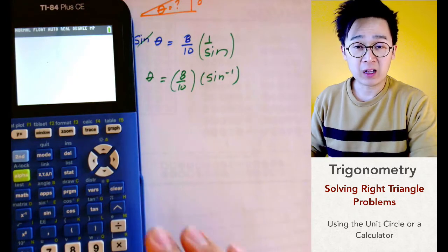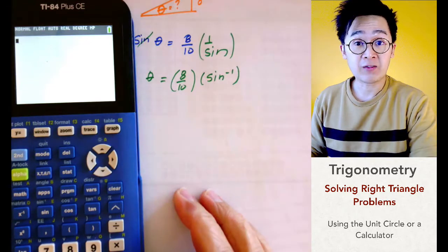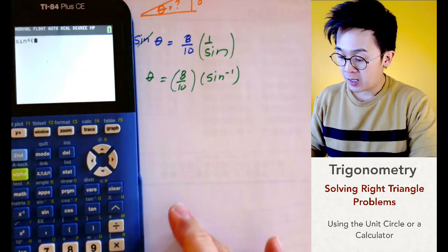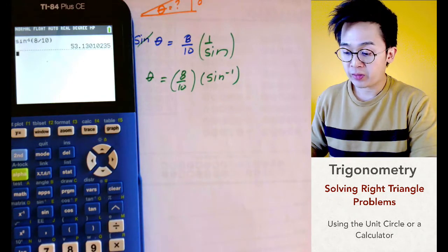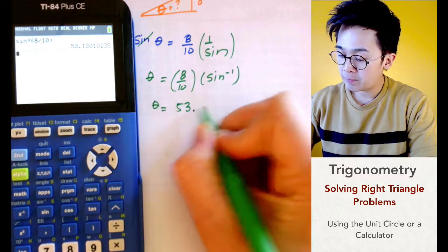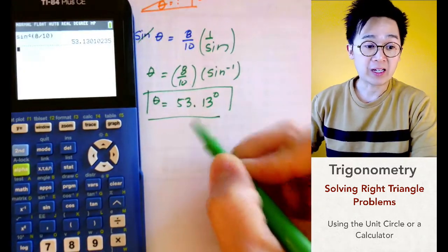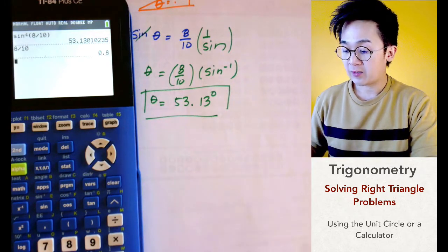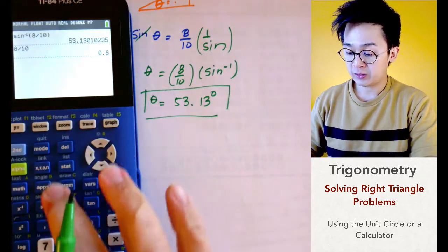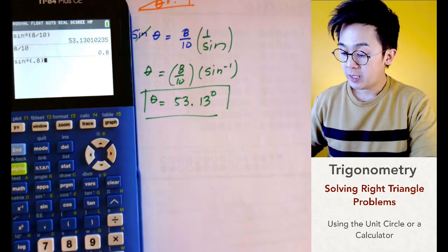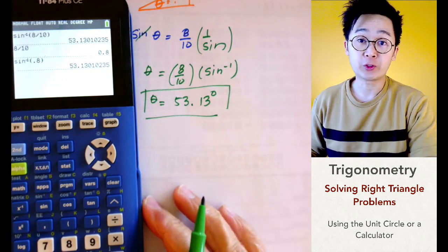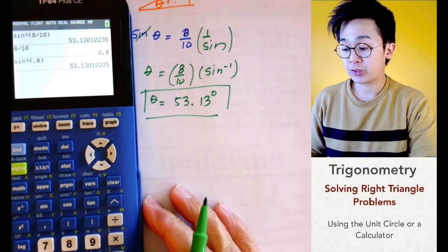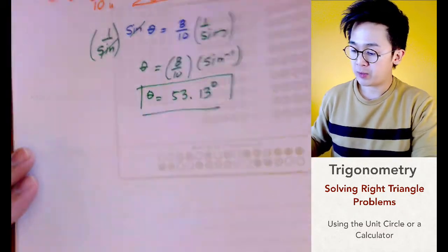There are different ways to use a calculator. On a scientific calculator, divide 8 by 10 to get 0.8, then press sine inverse to get the same result. On a graphing calculator, enter sine inverse of 8 over 10 directly. Both give theta = 53.13 degrees. Make sure you know how to use your graphing calculator, scientific calculator, or even your cell phone to find the sine inverse of a given value.